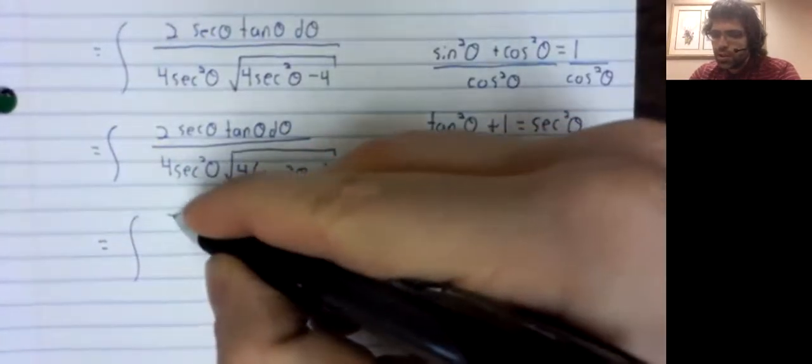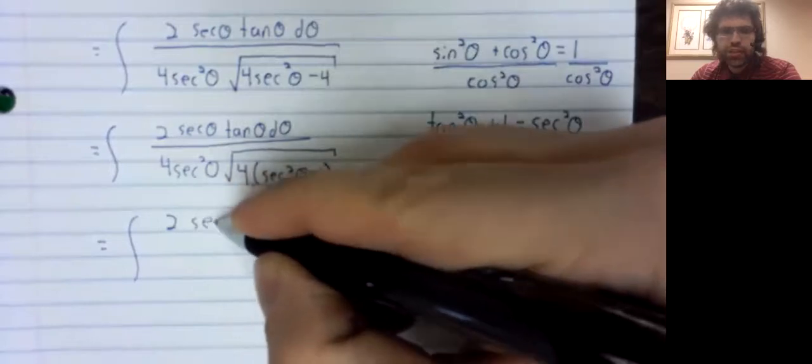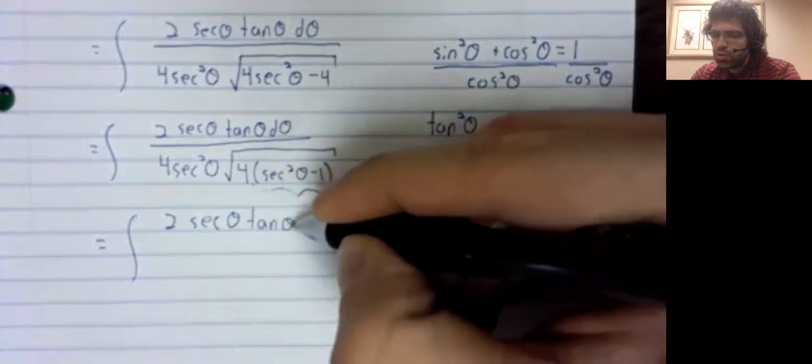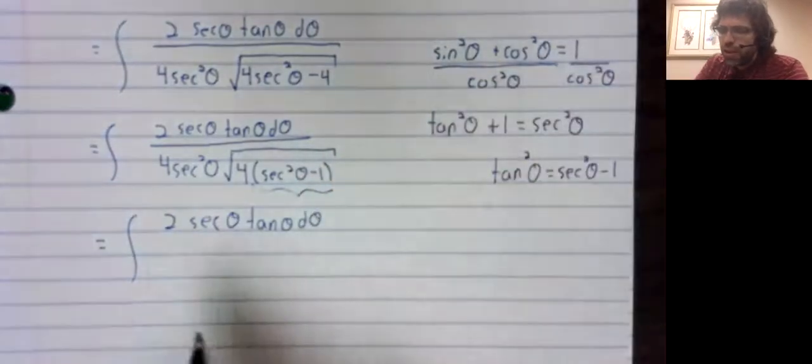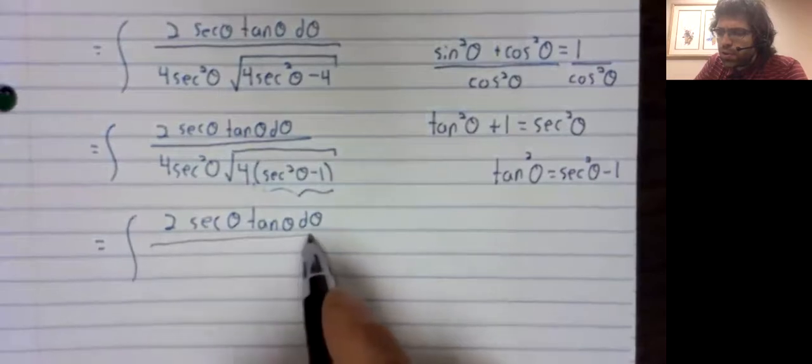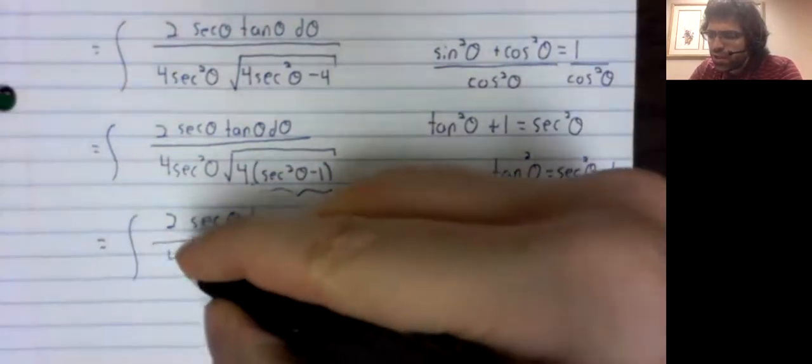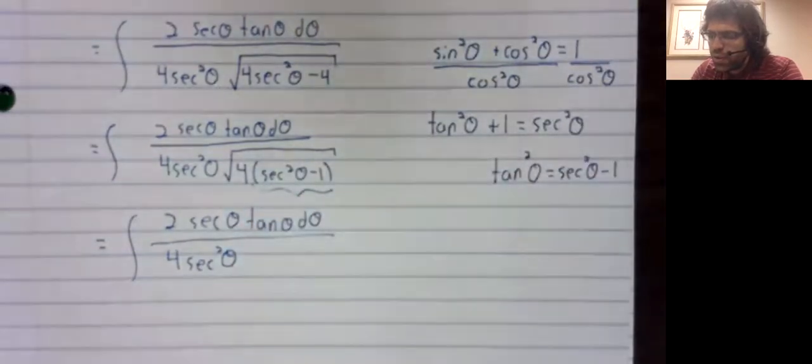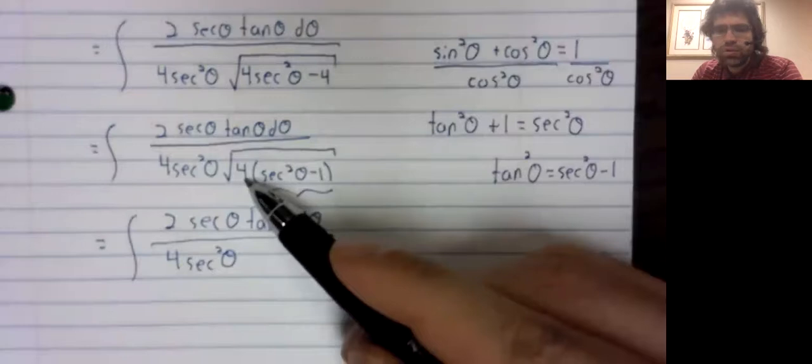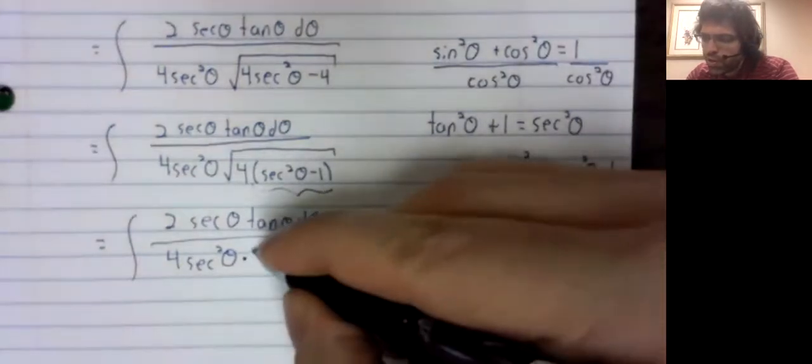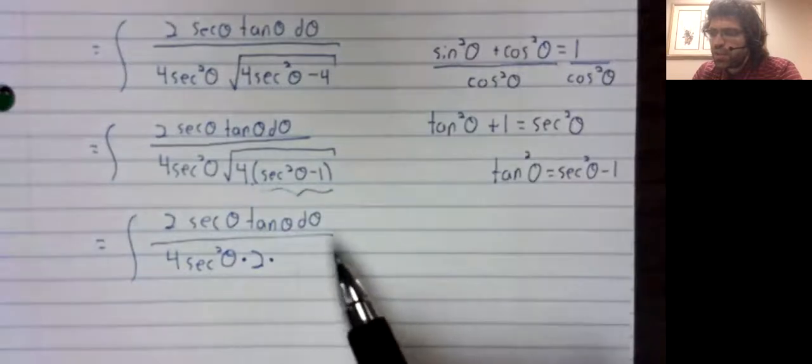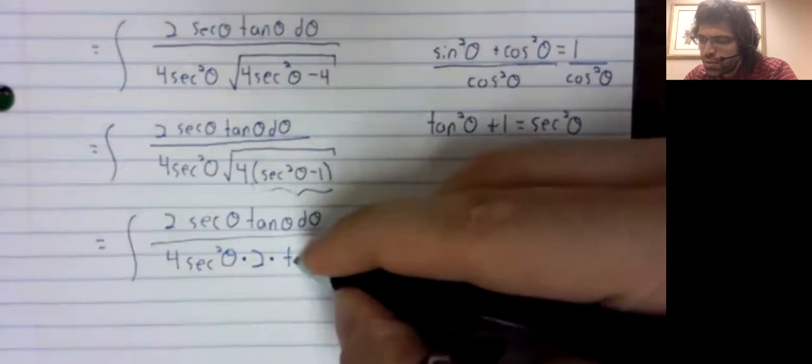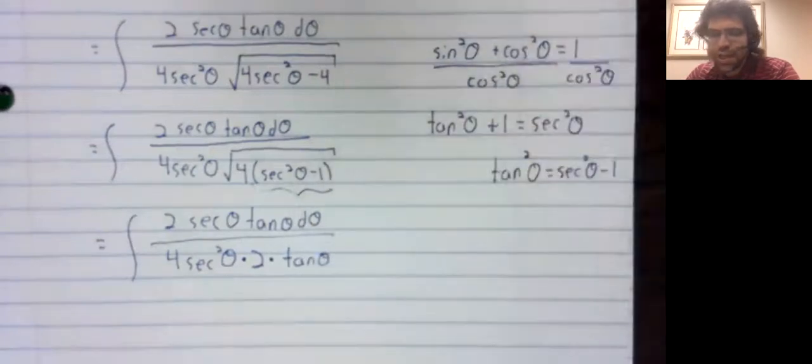So, that allows us to get rid of the square root. Sort of. I'll have a word to say about this at the end of the video. But for now, the square root of four is a two. And we'll say that the square root of the tangent squared is the tangent.